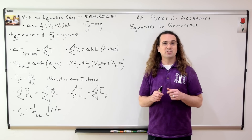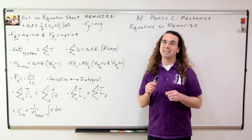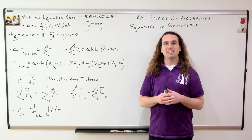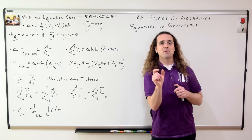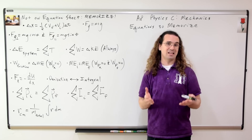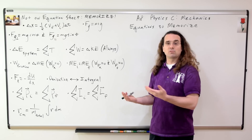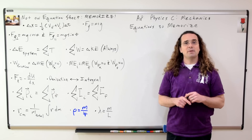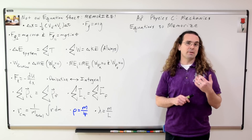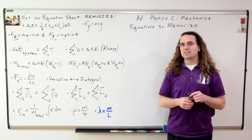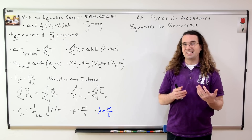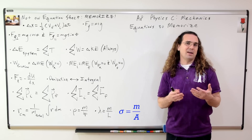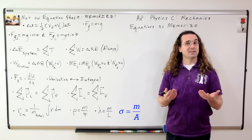The center of mass of a rigid object with shape is equal to one over the total mass times the integral of r with respect to mass, where r is defined as the distance each infinitesimally small piece dm of the object is from the zero reference line. Along with that, we have two equations for mass density. Volumetric mass density equals the total mass divided by the total volume, and linear mass density equals the total mass divided by the total length. I did not include surface mass density here because I have yet to see that on the AP Physics C Mechanics exam.